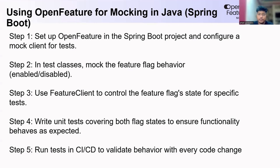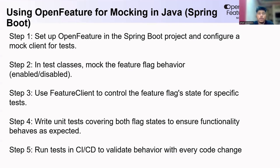Step three, use the feature client to control the feature flag state for the specific test. Step four, write unit tests covering both flag states to ensure functions behave as expected. Some of you may have questions like: JUnit and Mockito can easily do this job, so why use Open Features? While Mockito helps mock objects, it doesn't provide a specialized way to manage feature flags and toggle them easily across tests. Open Features simplifies flag management with built-in mock providers and ensures consistency and scalability, making feature flag testing more efficient and less error-prone.